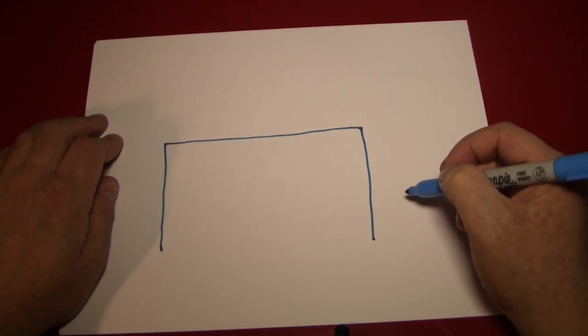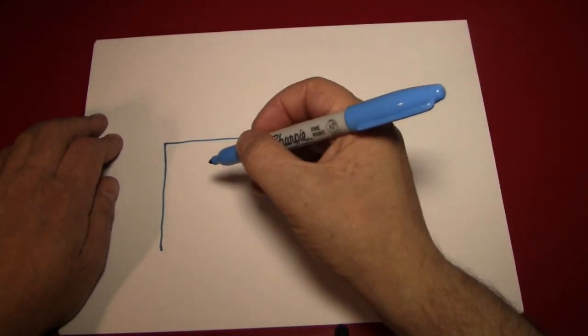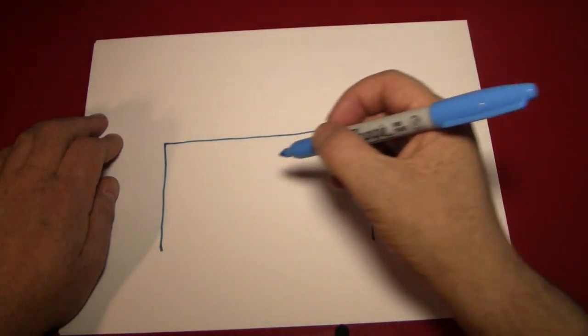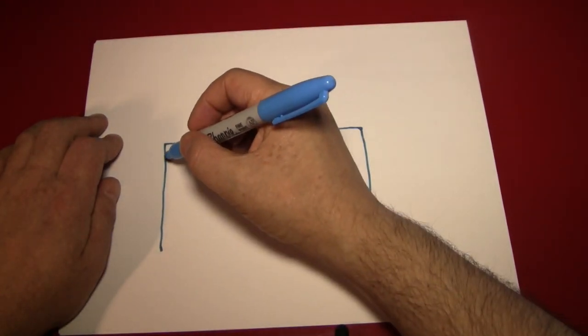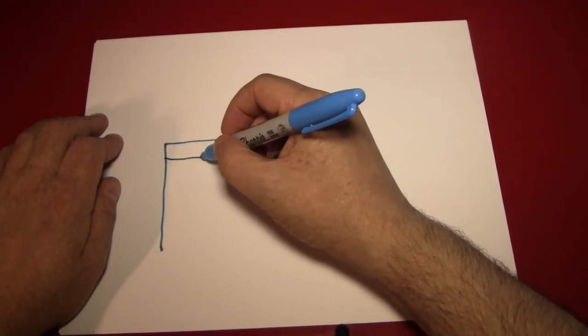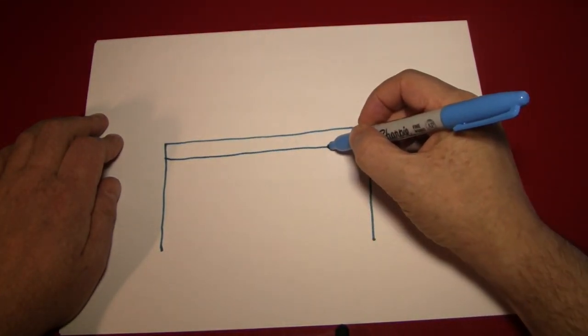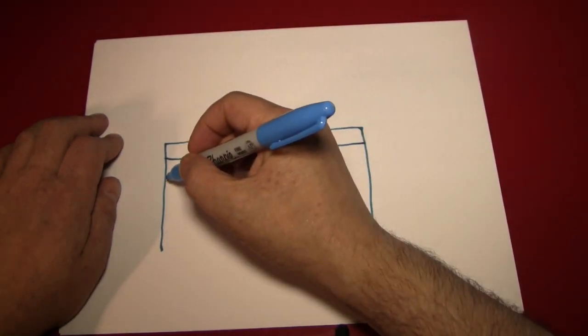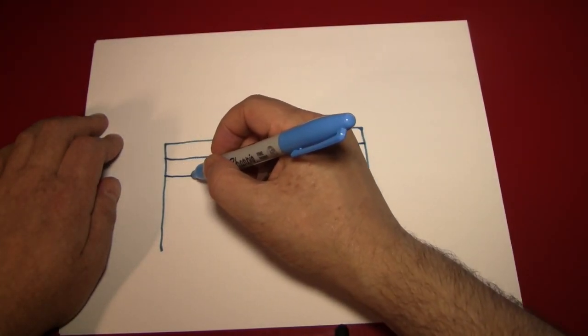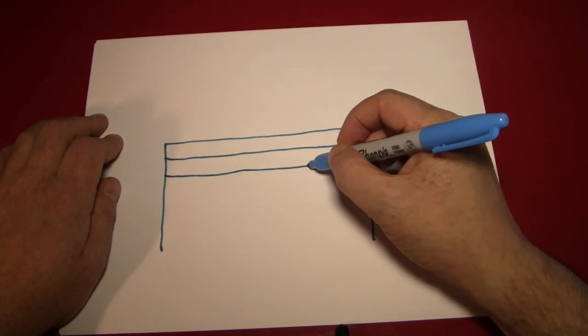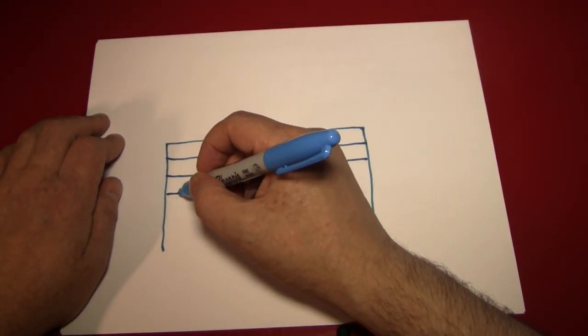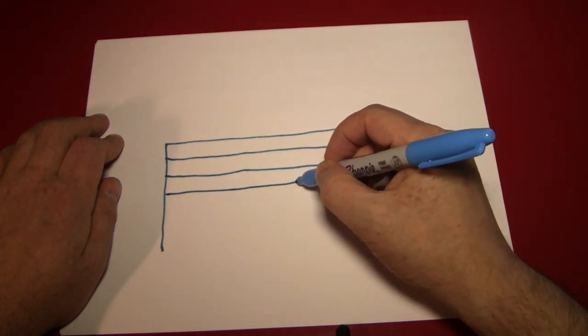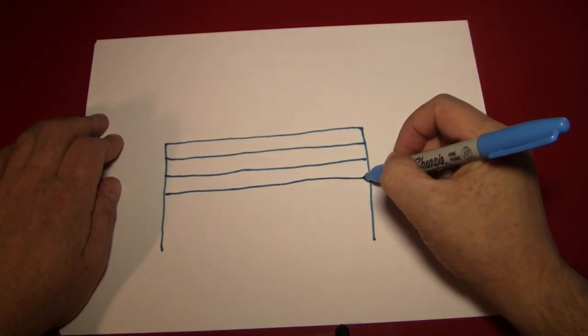The next thing we're going to want to do is create the rows for the bricks, because all of those are going to be even. So, we'll make a couple of horizontal lines, and we'll try to be as even as possible. Because bricks are fairly standard, that's a brick joke, if anybody got that.